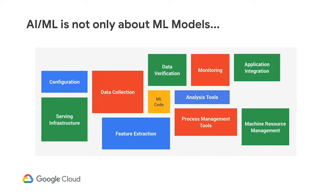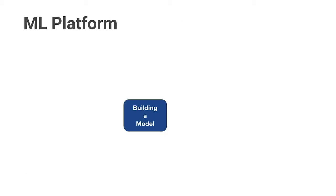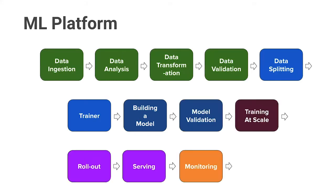Let's look at these blocks in sequence to understand the process of ML model building. You start with data — figuring out where to get data, data analysis, data transformation, validation, creating test sets and training sets. Then you train and build a model, experiment extensively, validate the model, and figure out whether it actually does what you're looking for. After that, you train at scale, roll out to production, build an application around it, and eventually monitor and add logging as well.